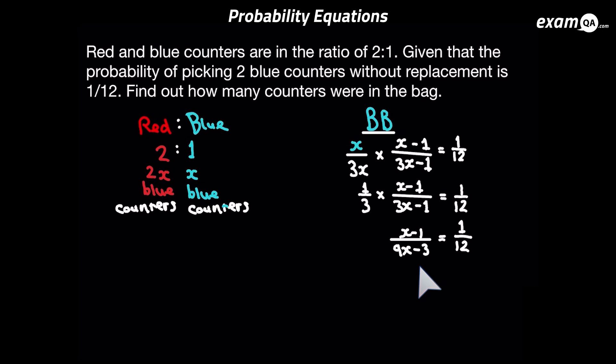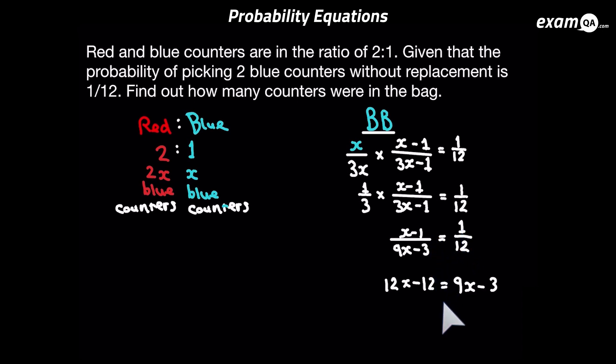Now we're going to do some cross multiplying. Since this is a grade nine topic I assume you're good with algebra. So 9x minus 3 is going to times the 1 on top of the 12, and that 12 is going to times the x minus 1. Now some basic algebra to solve what x is — and the good thing is it's a linear equation. So we get 3x equals 9, and dividing both sides by 3 we get x equals 3.